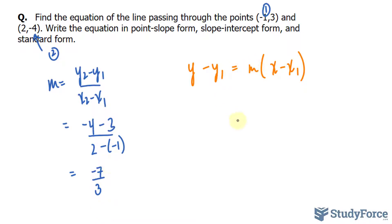This gives us minus 7 and positive 3 at the bottom. Let me substitute this now into m, negative 7 over 3. And I'll choose one of these points for the coordinates that I'll substitute into these two. Let me choose this one, negative 1 and 3.